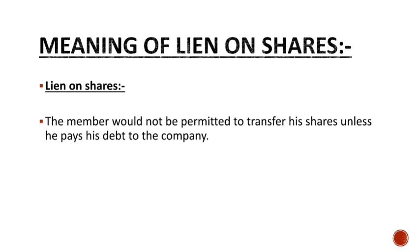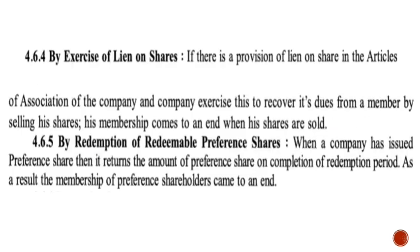With lien on shares, if you don't make payment, your rights are restricted — voting rights are not available and you have no decision-making power. You cannot transfer or sell your shares unless you pay the full debt to the company. So that is what is known as lien on shares.